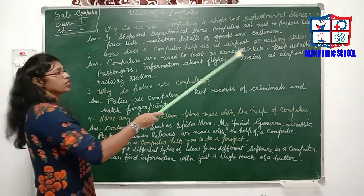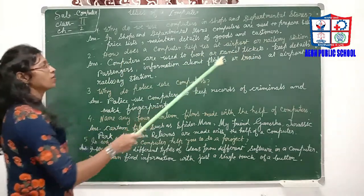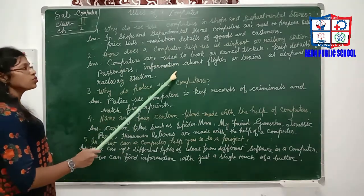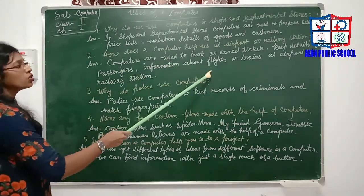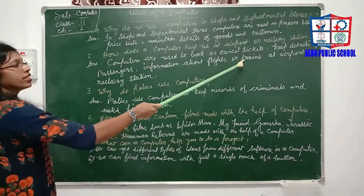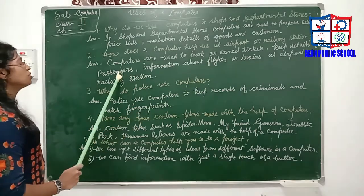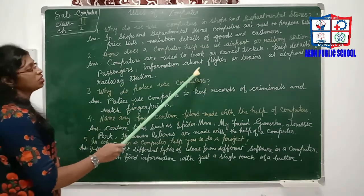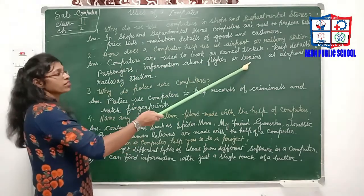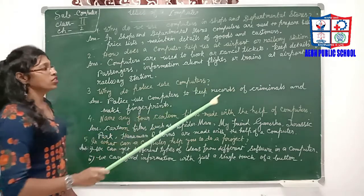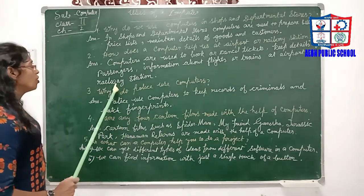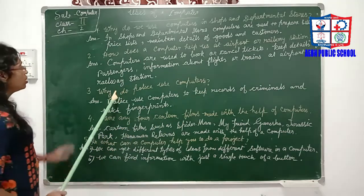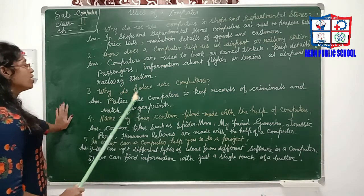Question 2: How does a computer help us at an airport or railway station? Computers are used to book or cancel tickets, keep details of passengers, and provide information about flights or trains at airports or railway stations.